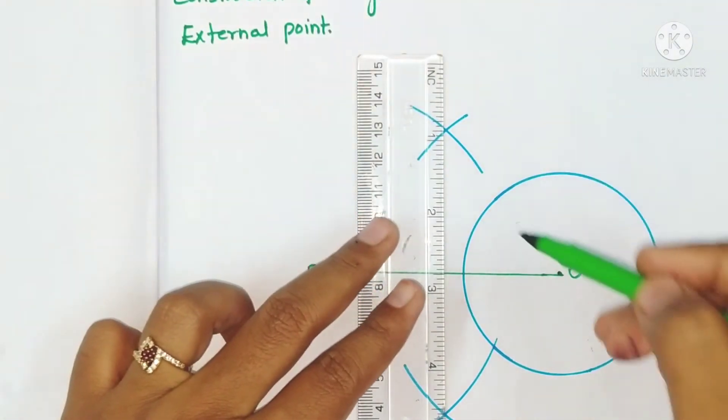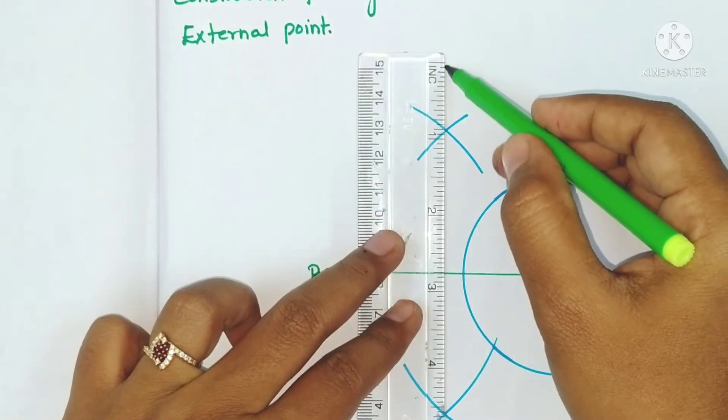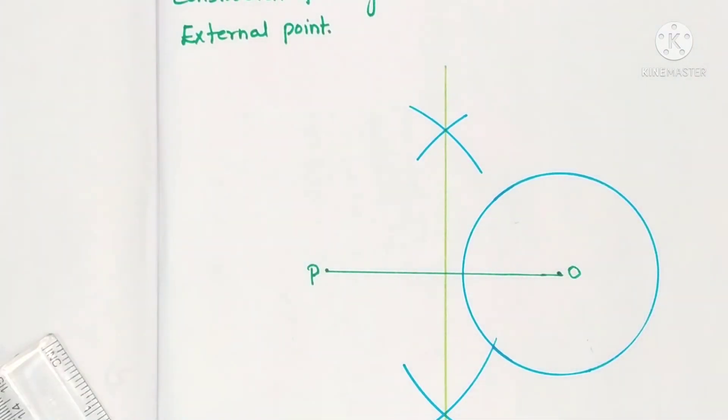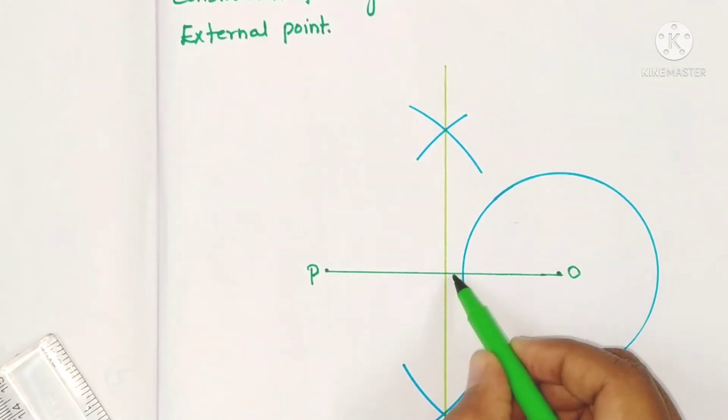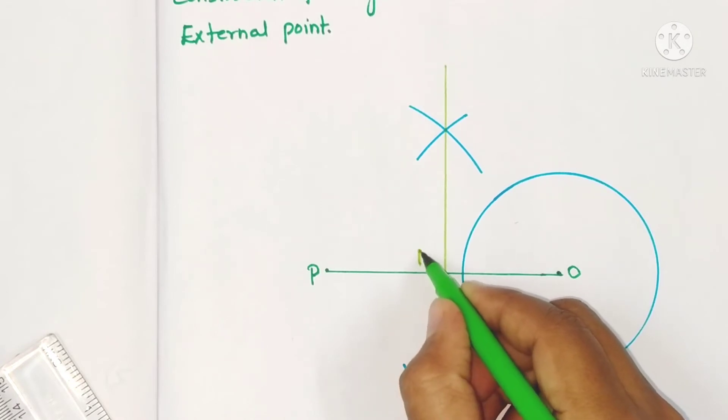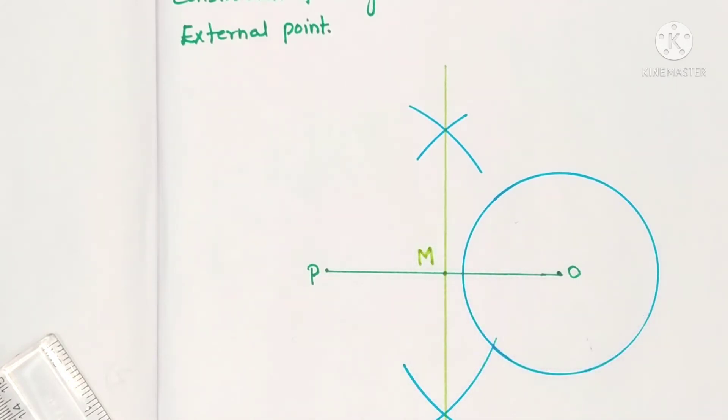Draw a line through this point of intersection of arcs, so this is the perpendicular bisector of OP. Now it intersects at one point. Let it be M—the intersecting point is taken as M.